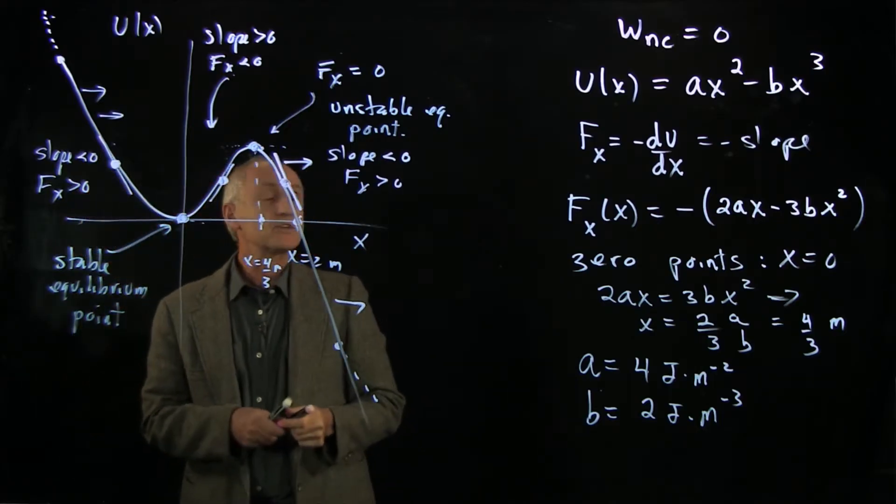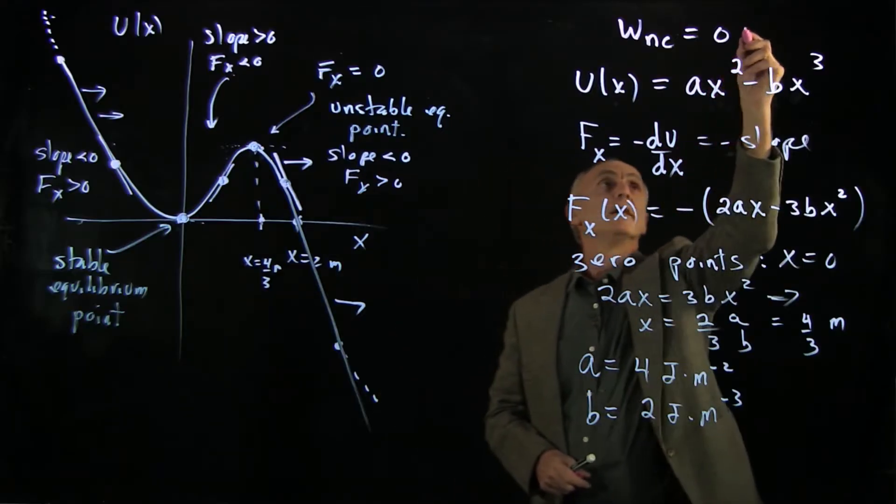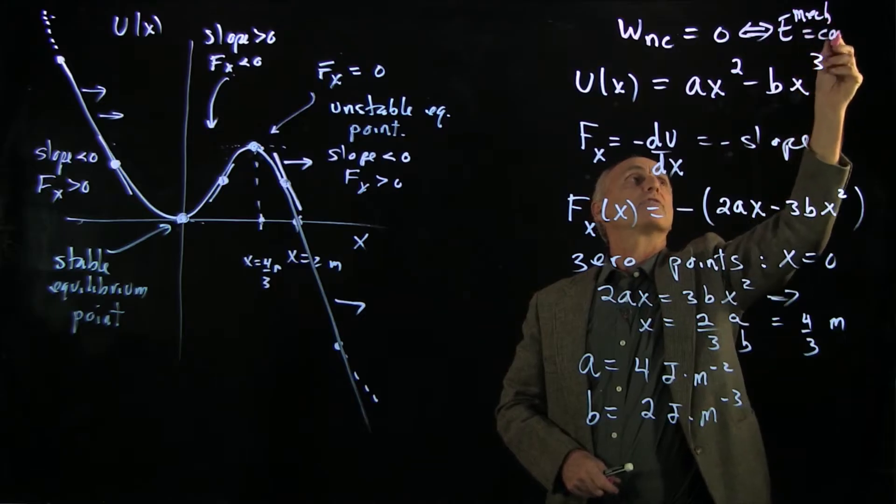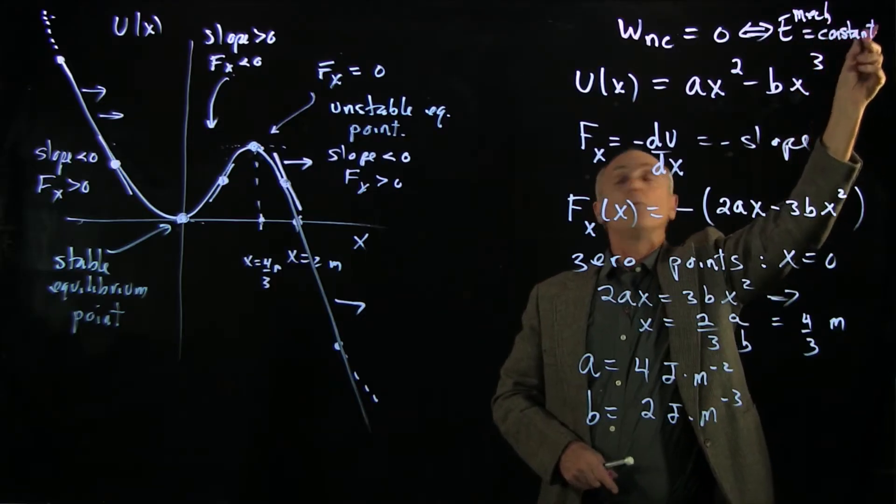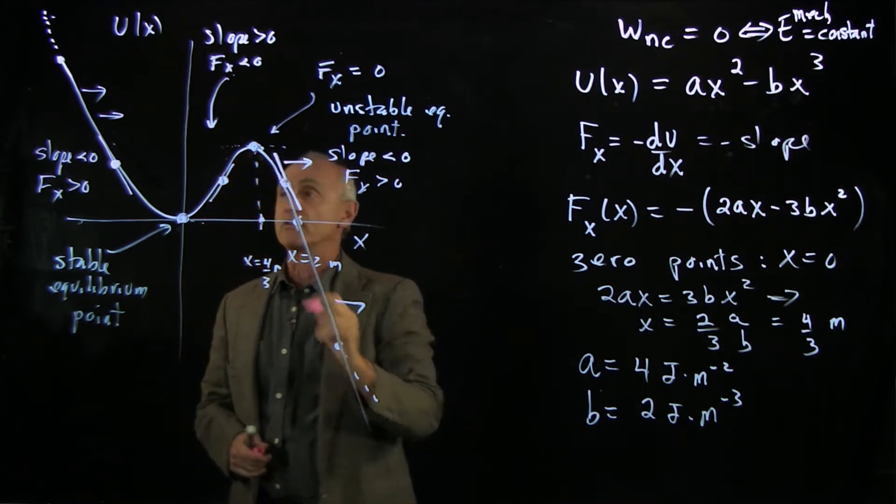Suppose our system, because the work non-conservative is zero, tells us that the mechanical energy is constant. Now, we don't know how much mechanical energy our system has. That's a constant of the system.